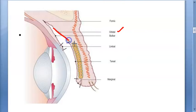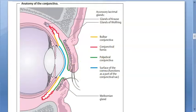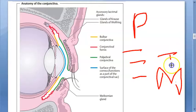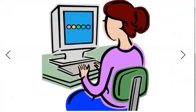The third part of the palpebral conjunctiva is the orbital conjunctiva. It lies loose between the tarsal plate and the fornix. So to summarize, palpebral conjunctiva has three parts: marginal, tarsal, and orbital.